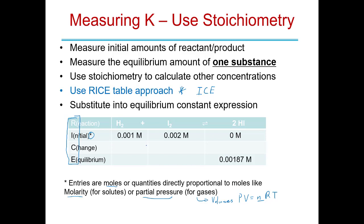We're going to use molarity in this problem. The first thing you do is list out your balanced chemical reaction: H₂ plus I₂ in equilibrium with two moles of HI, all gas-phase substances, so we're talking about Kc, a concentration-based equilibrium constant. Each reactant and product becomes the heading of a column in the table. We list our initial amounts: 0.001 M of H₂, 0.002 M of I₂, and no HI initially.